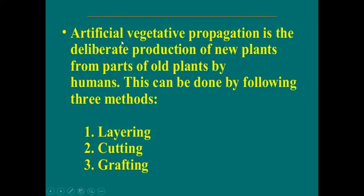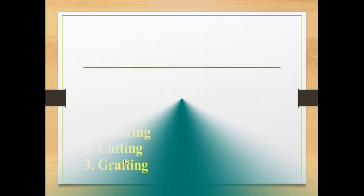Artificial vegetative propagation is the production of new plants from parts of old plants by humans. There are three methods followed in artificial vegetative propagation: layering, cutting and grafting.